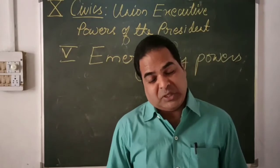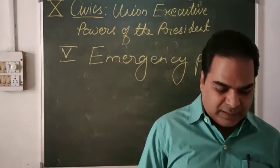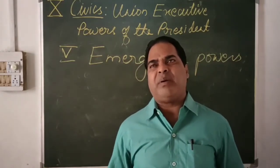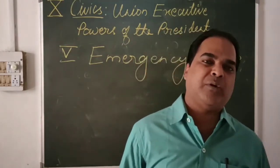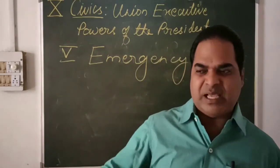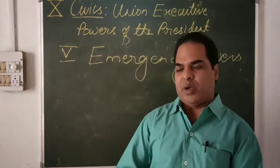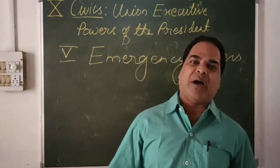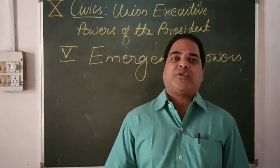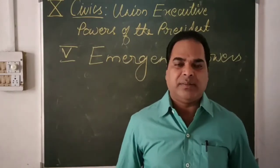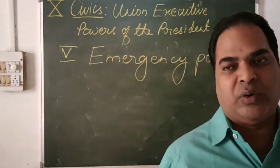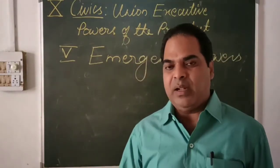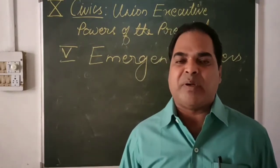The second one is constitutional emergency. Whenever the government fails to run according to the Constitution — suppose elections are held, government cannot be formed, again elections are held, no party came to power — then it is not wise to conduct elections again and again. At that time we can impose president's rule. Even under president's rule in a state, the governor becomes the head and under the guidance of the president will look after the administration of that state.